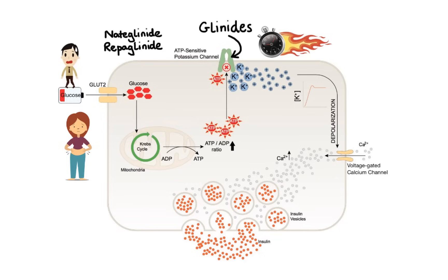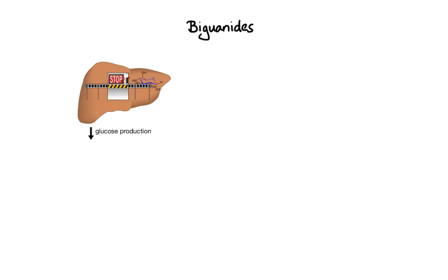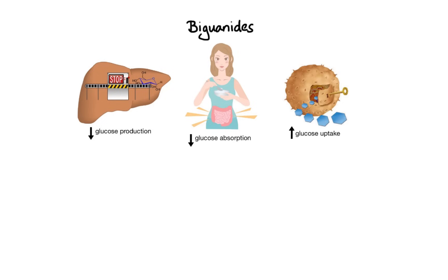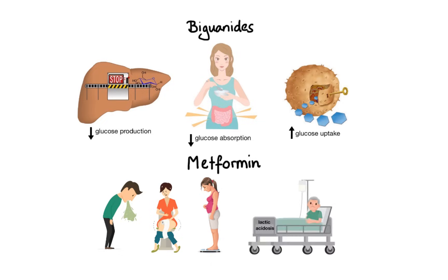Now let's discuss biguanides. The exact cellular mechanism of action is not entirely understood; however, the main blood glucose lowering activity appears to be primarily through reduction of hepatic glucose production. Additionally, biguanides slow intestinal absorption of glucose and increase insulin sensitivity, enhancing peripheral glucose uptake. The only biguanide currently available is metformin. Most common side effects are limited to the GI tract and include nausea, vomiting, diarrhea, and loss of appetite, which may lead to weight loss. Because metformin decreases hepatic uptake of lactate, it may increase the risk of lactic acidosis, particularly in patients with organ dysfunction such as congestive heart failure or renal impairment.